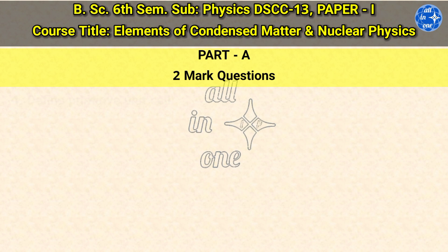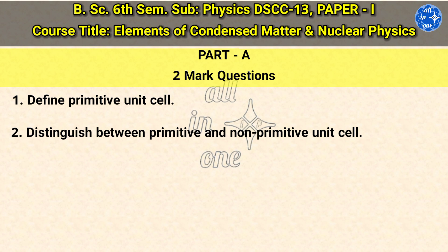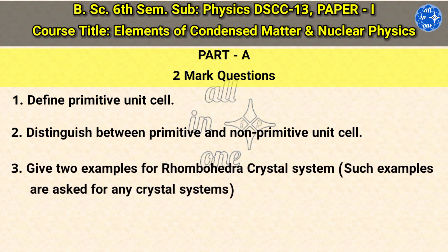2 mark questions. Question 1: Define primitive unit cell. Question 2: Distinguish between primitive and non-primitive unit cell. Question 3: Give two examples for rhombohedral crystal system. Such examples are asked for any crystal systems. Question 4: What are Miller indices?